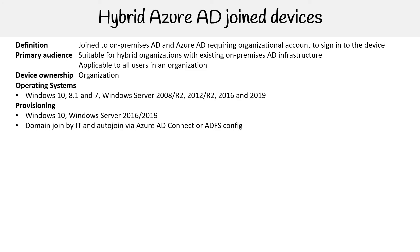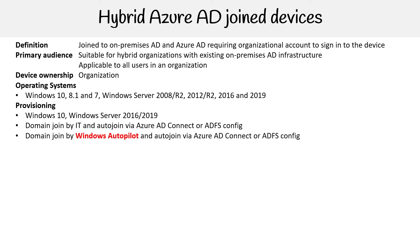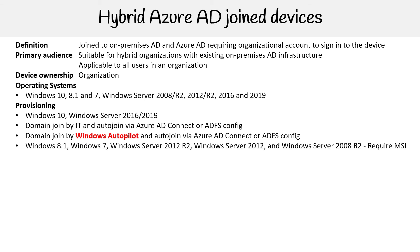You can join the domain — or the domain is joined by IT — and it will auto-join via Azure AD Connect or configured with AD FS. You can also join the domain using Windows Autopilot, which we'll talk about a little bit in the next slide.